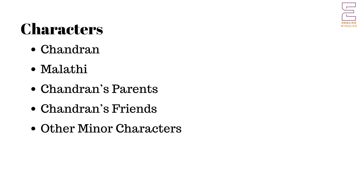Characters. Chandran: the protagonist whose experiences and transformations drive the narrative. Malathi: the object of Chandran's affection, representing young love. Chandran's parents: represent traditional Indian parental roles, concerned about their son's future. Chandran's friends: provide contrast to Chandran's character and his perceptions of life. Other minor characters, including professors and people Chandran meets during his travels, contribute to the development of the plot and themes.